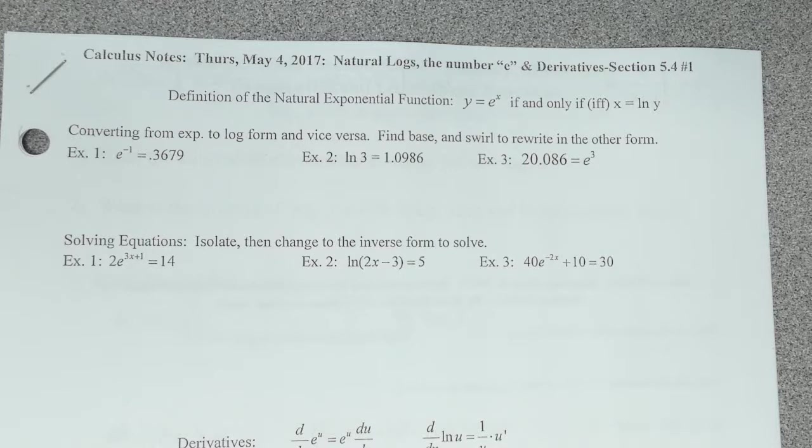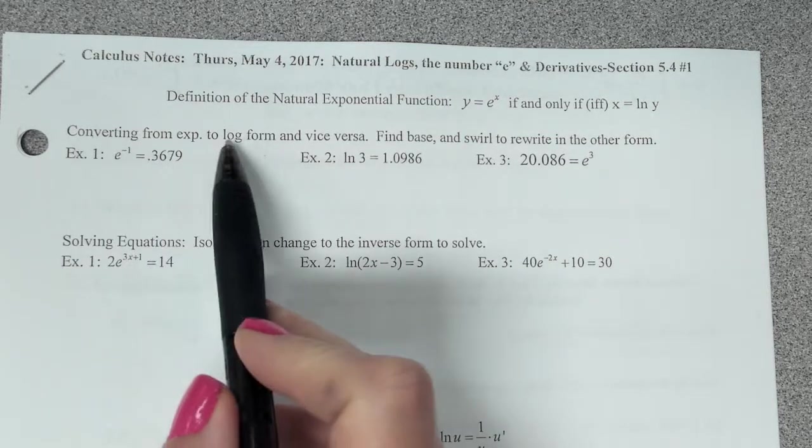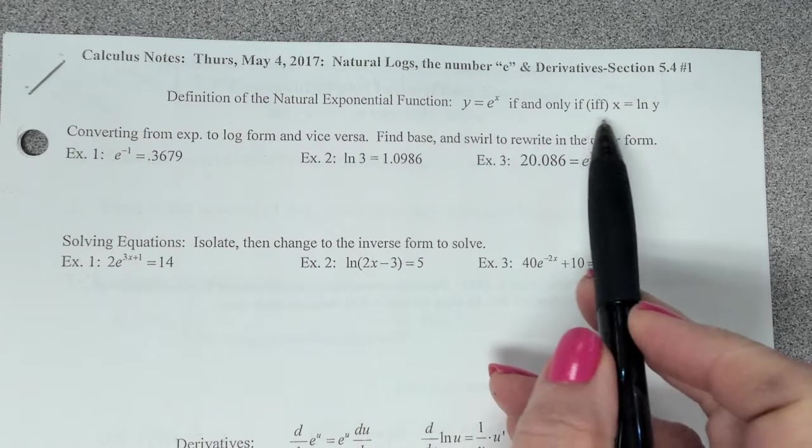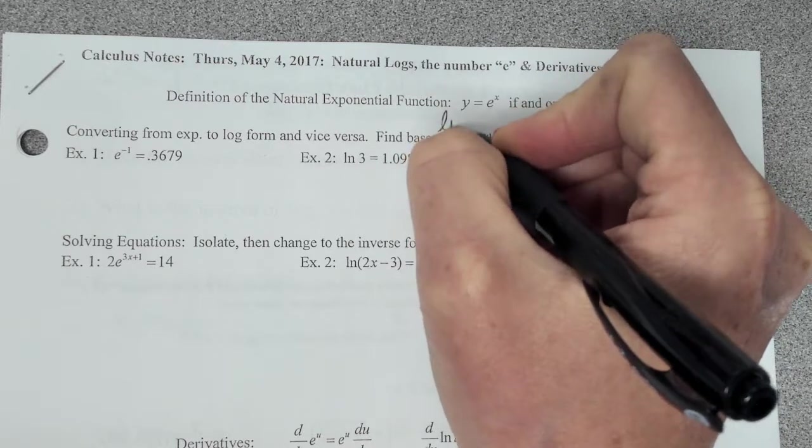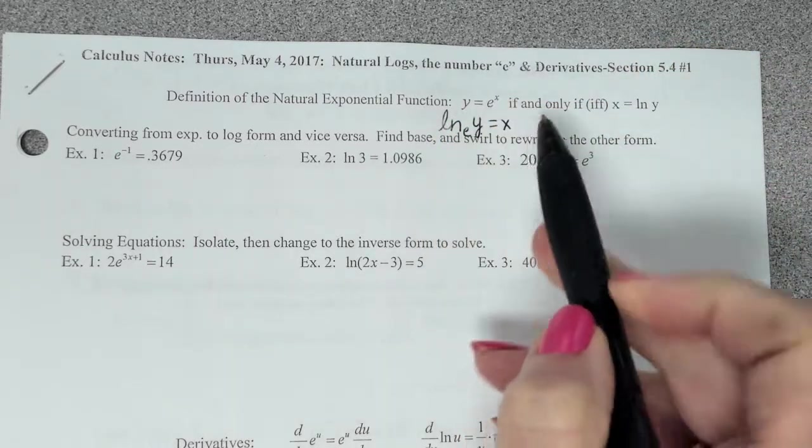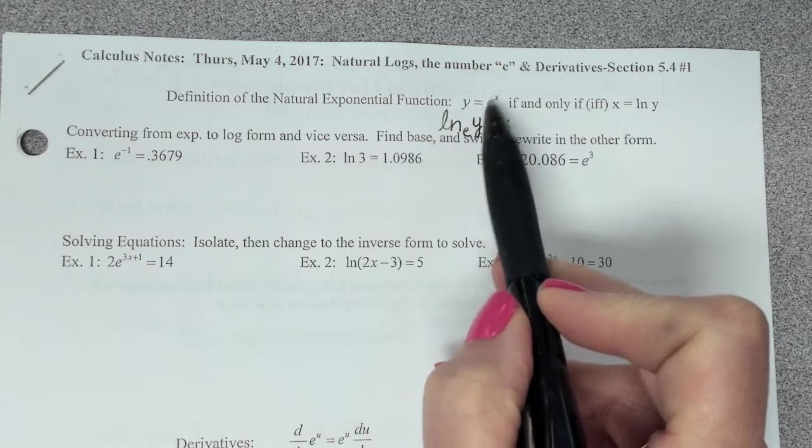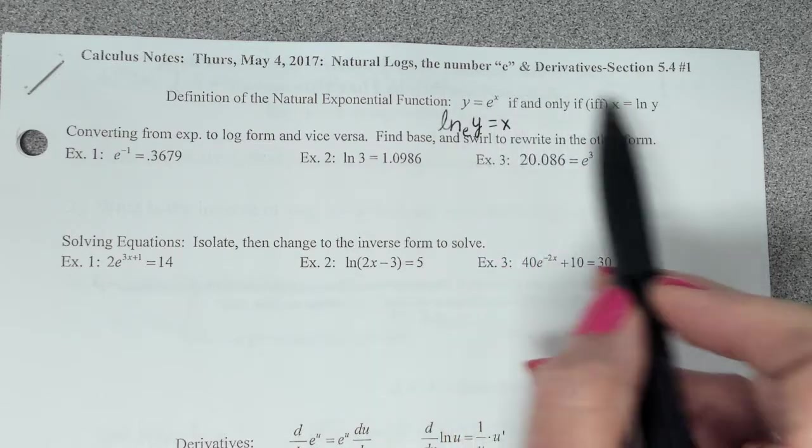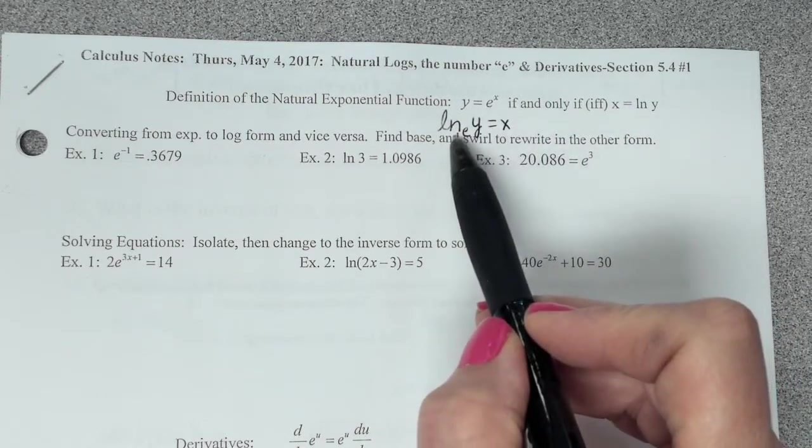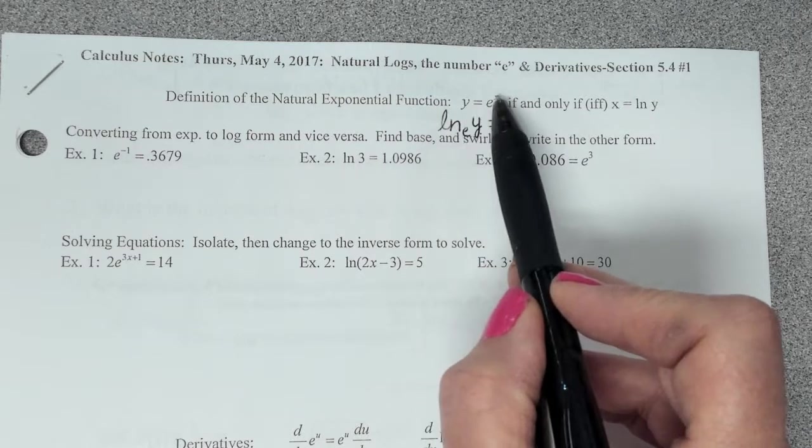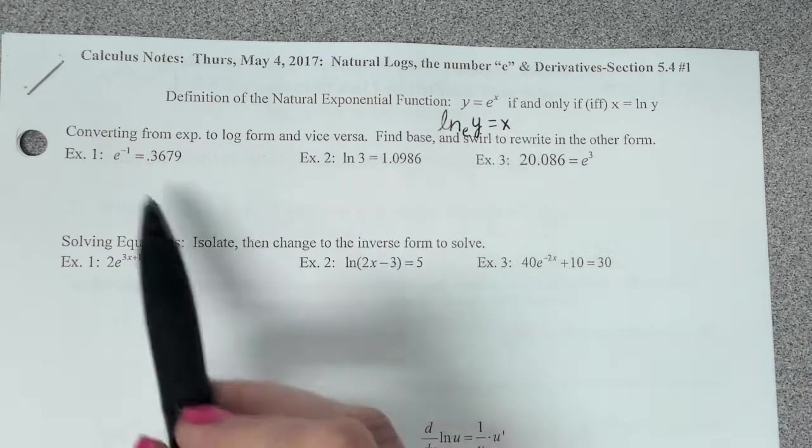All right, guys, so let's take a look at these. On the first types, it's asking us to convert from exponential to log form and vice versa. If we have y equals e to the x, that is equivalent to if I take the natural log, I find my base, I swirl it around, and I come back to the exponent. So another way of writing y equals e to the x is the natural log of y equals x. These are inverse functions, but I can just rewrite this as a log by doing, once again, natural log, find the base, the base is e, swirl it around to the y, and then back over again to the x. That's the kind of thing we're doing here.